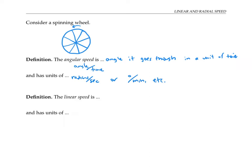The linear speed is the speed of a point on the rim of the wheel. So that is the distance a point on the rim of the wheel travels in a unit of time.